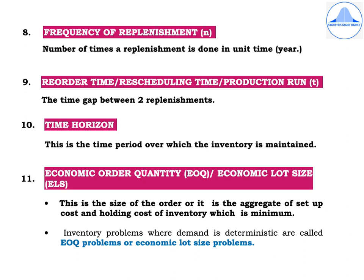The frequency of replenishment is denoted by N. It is the number of times a replenishment is done in unit time, that is, a year. Then we have the reorder time, rescheduling time, or production time, denoted by T — the time gap between two replenishments is called the reorder time. Then we have the time horizon, which is the time period over which the inventory is maintained.